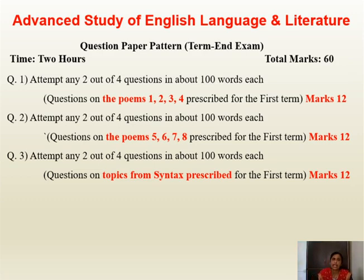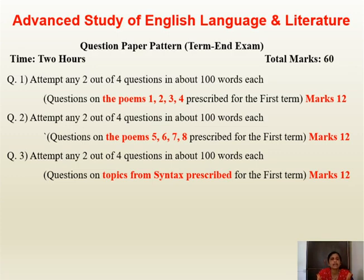Question 1: Attempt any 2 out of 4 questions in about 100 words each. The questions will be based on poems 1 to 4 prescribed from the first term, and this question carries 12 marks — each question carrying 6 marks. Question 2 is also on poems, similarly attempt any 2 out of 4 in about 100 words each, with questions on poems 5 to 8 from the first term. This question is also of 12 marks, each carrying 6 marks.